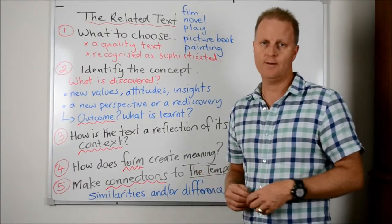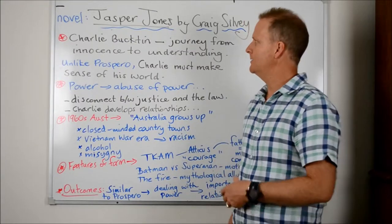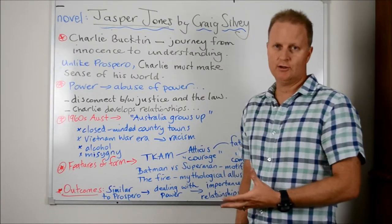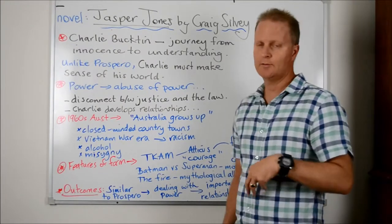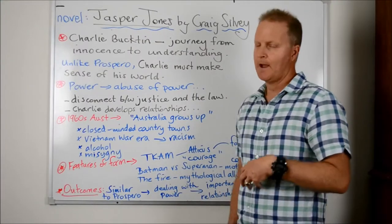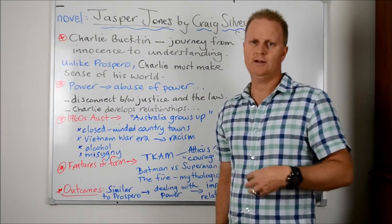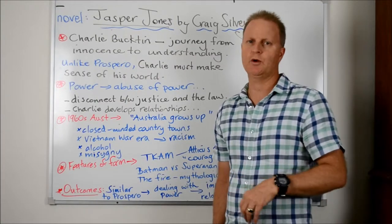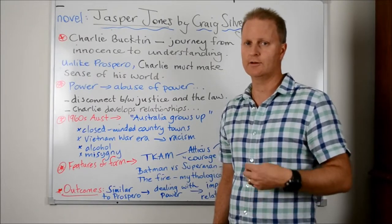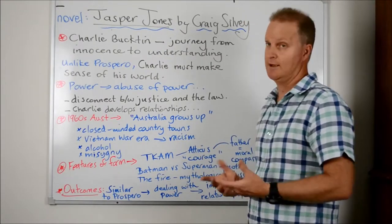Similarities or differences are very valid ways of doing that. An example of a related text would be the novel Jasper Jones by Craig Silvey. Basically what we are going to do when we look at the novel is trace the journey of the central character. Charlie Buckton is the central character and he has that journey from innocence to understanding — that real coming-of-age type story. And straight away we can see, unlike Prospero, Charlie has to make sense of his world. He's a young boy, innocent and impressionable, exposed to some harsh realities. That differs from Prospero who is very experienced in the world and prides himself on his level of knowledge and his practicing of his art.